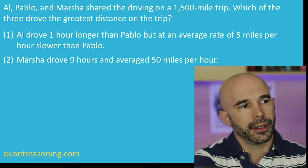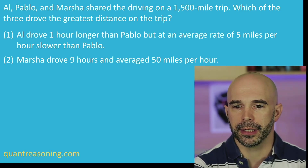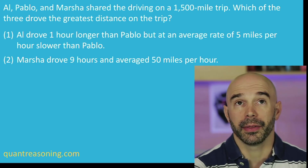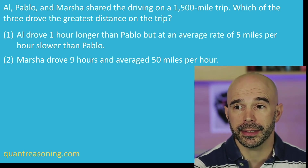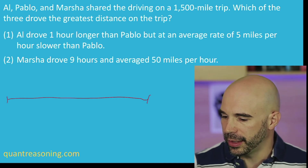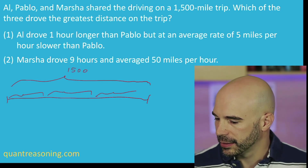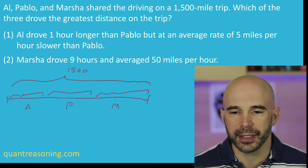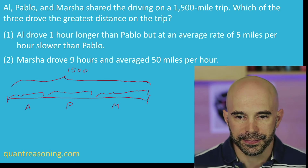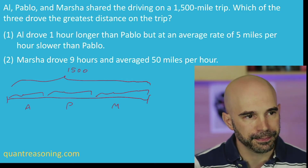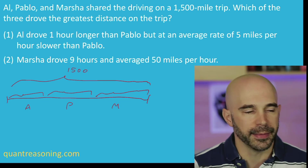Let's talk about this question. I think a lot of people would probably build an equation for the free info: a plus p plus m equals fifteen hundred. And then they would ask which of those three variables is the greatest. Maybe a better way to think about it is to draw a number line that has a total of fifteen hundred, broken into three segments — a, p, and m. This is just a visual way to ask myself which of these segments is greatest.